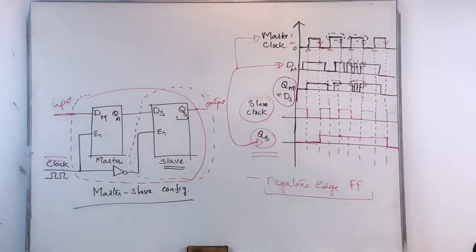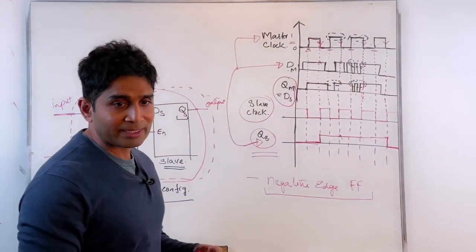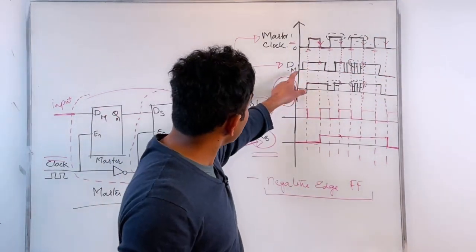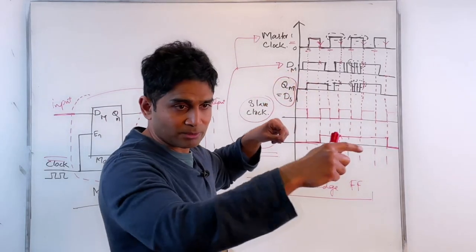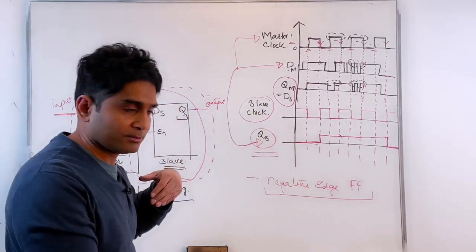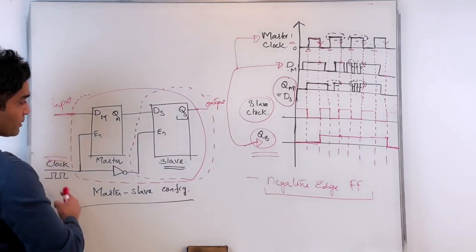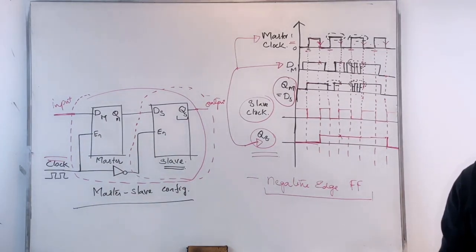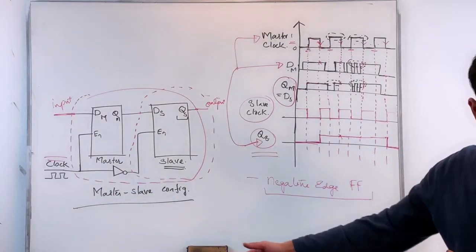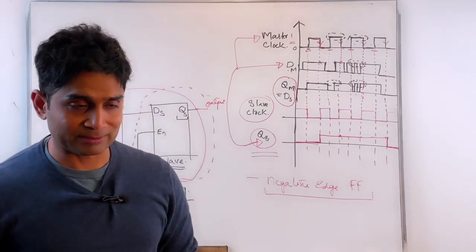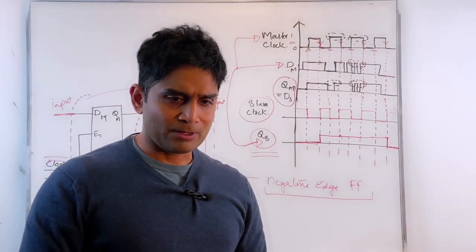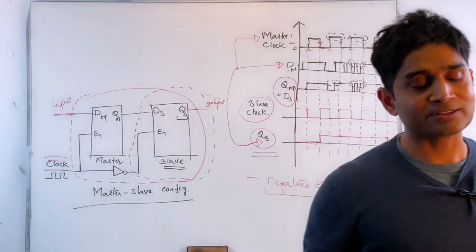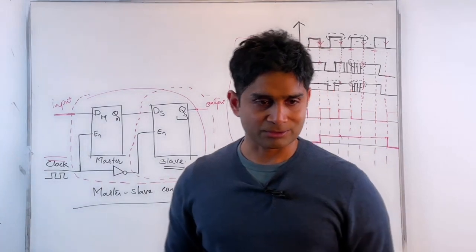A good exercise would be to extend this analysis to 10 clock pulses using an arbitrary DM signal, and verify that the flip-flop behaves as a negative edge triggered flip-flop over those 10 clock cycles. We now know how a negative edge triggered flip-flop works, and in the next class we'll extend our discussion on this.